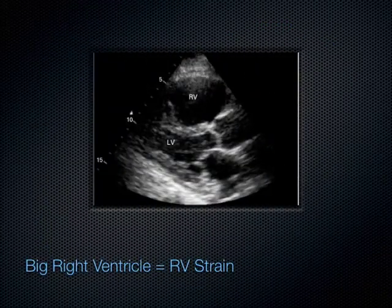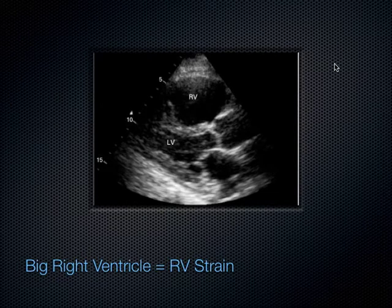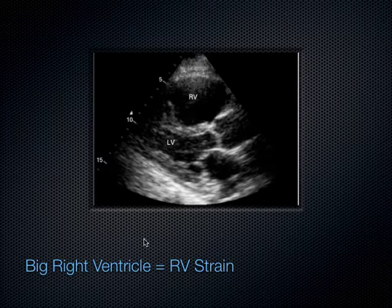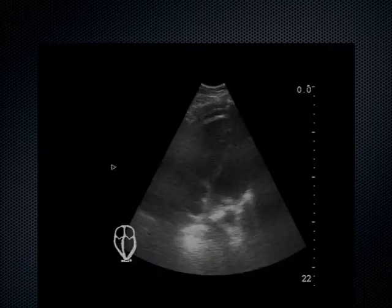Here's an example of RV strain in the parasternal long axis: left atrium, left ventricle, aortic outflow tract, and the right ventricle — which is clearly bigger than the LV. Normally the RV should be two-thirds the size of the LV. With massive pulmonary embolism, the RV is trying to pump against the clot in the pulmonary artery — blood has nowhere to go, so the RV gets bigger and bigger. This makes complete logical sense.